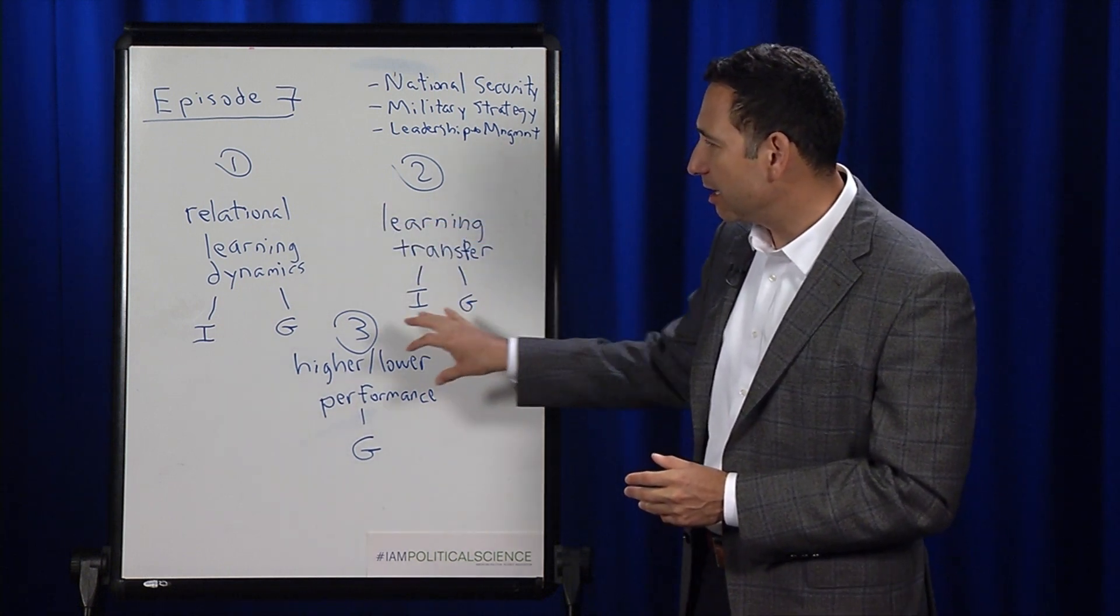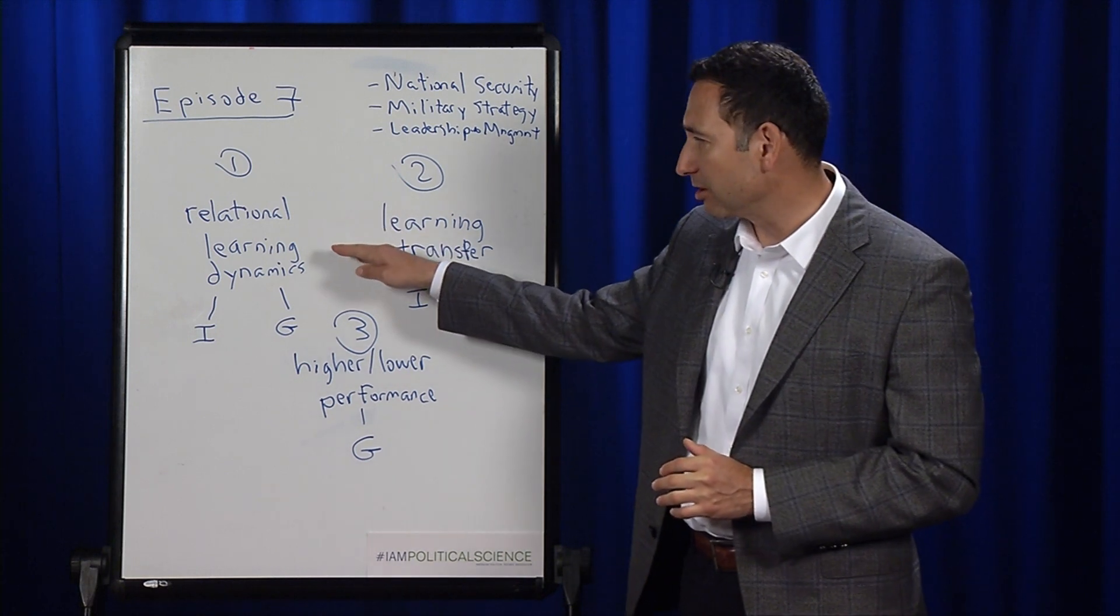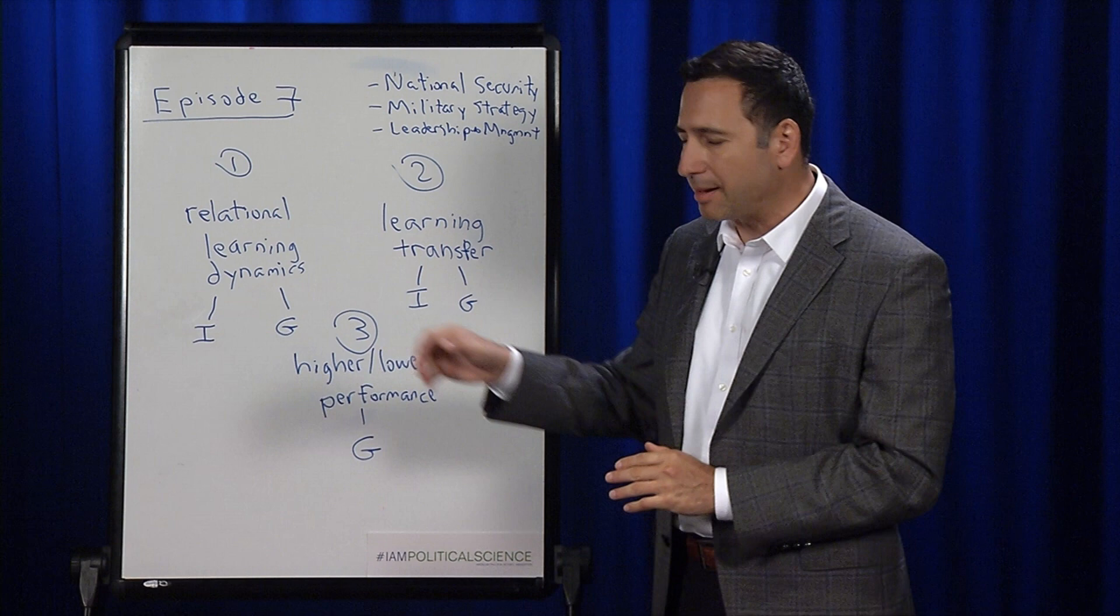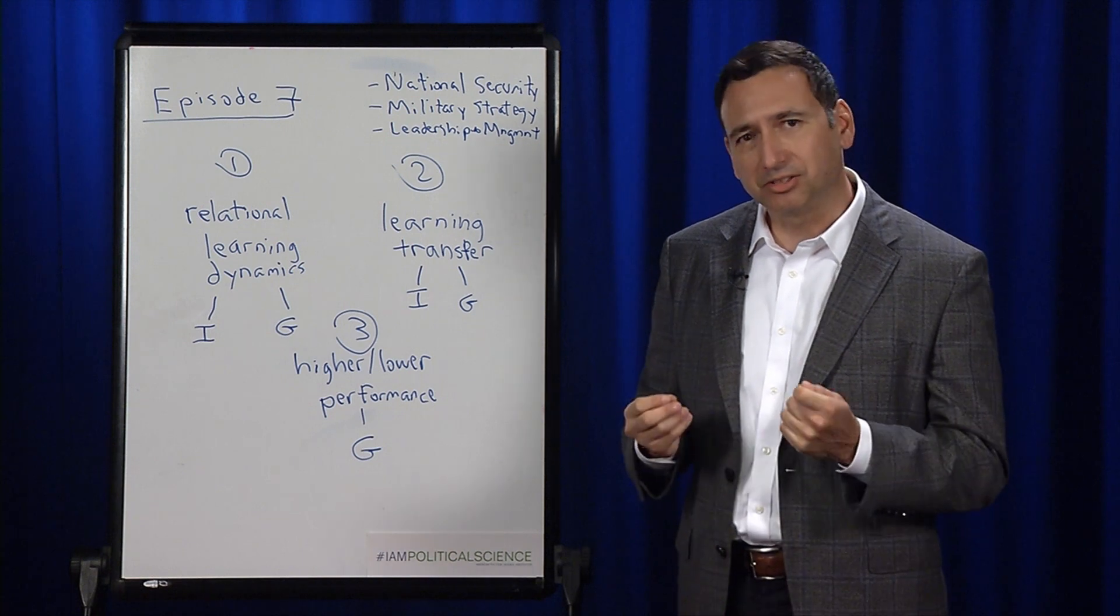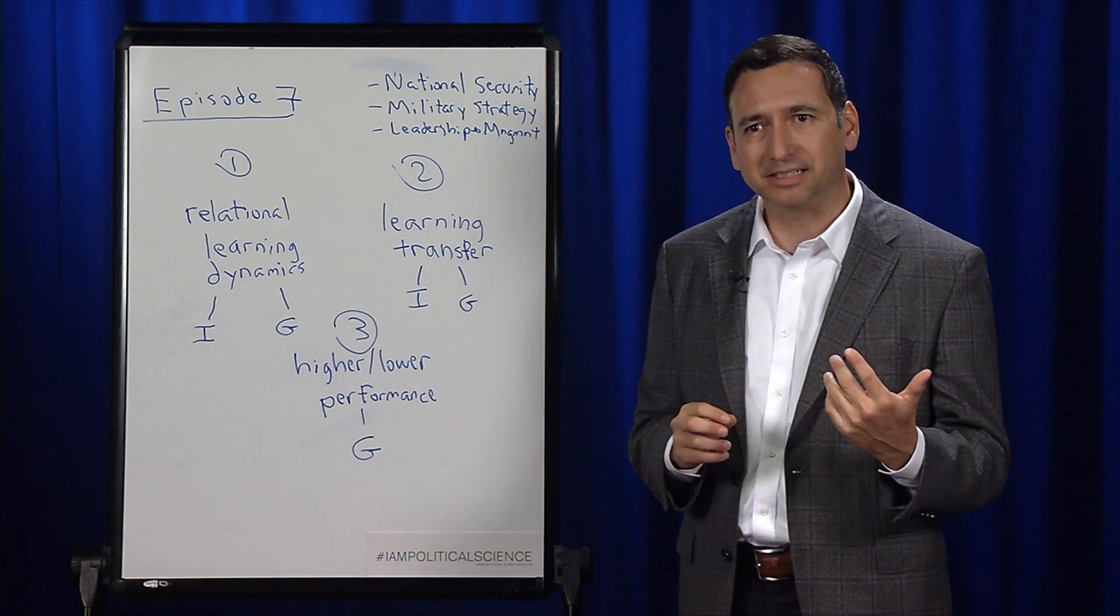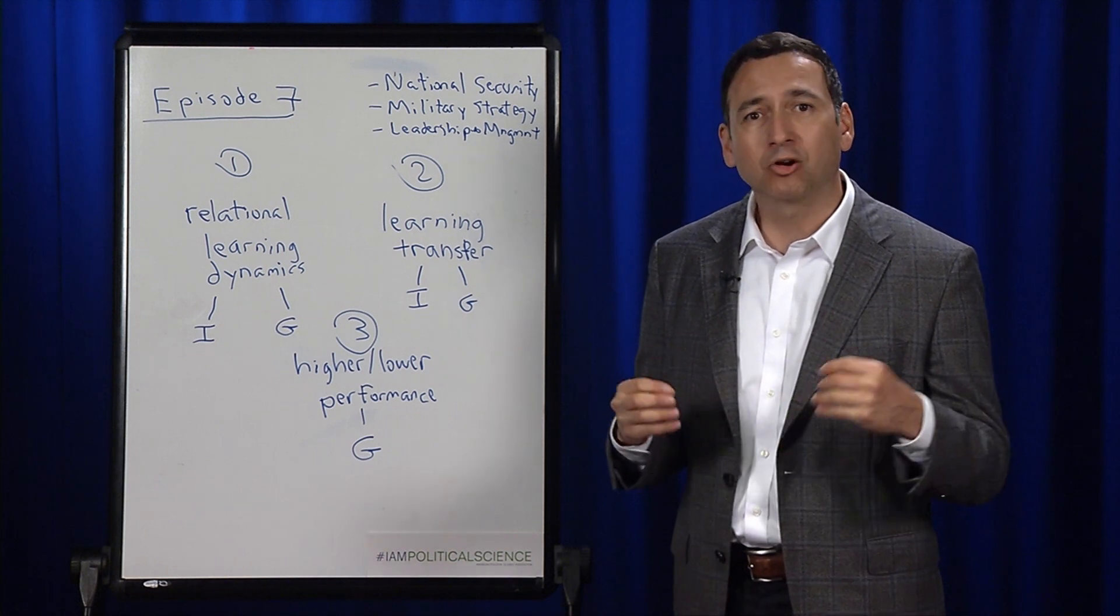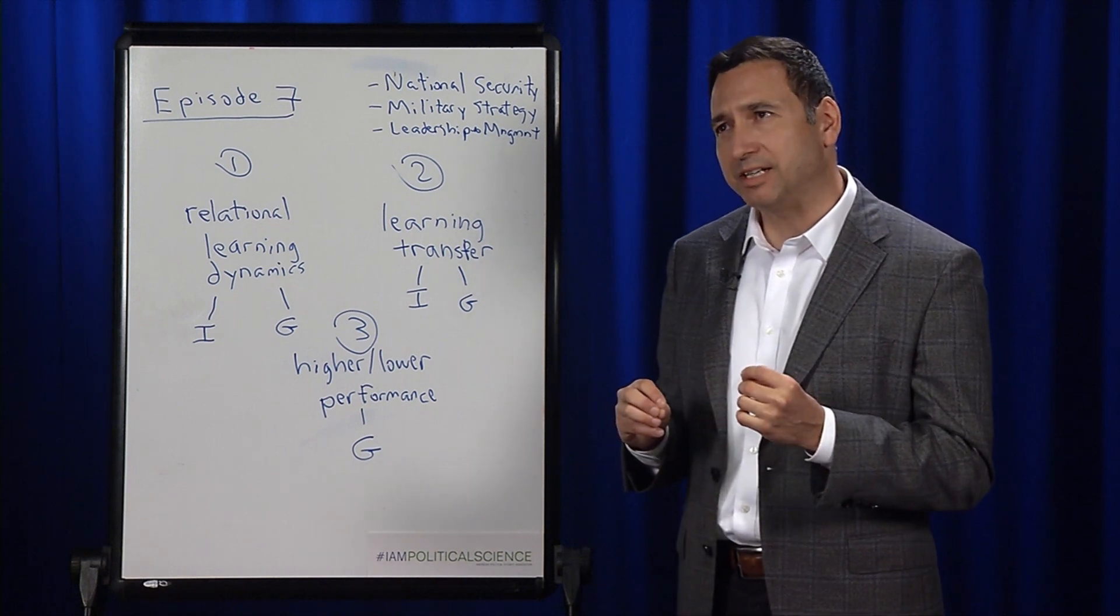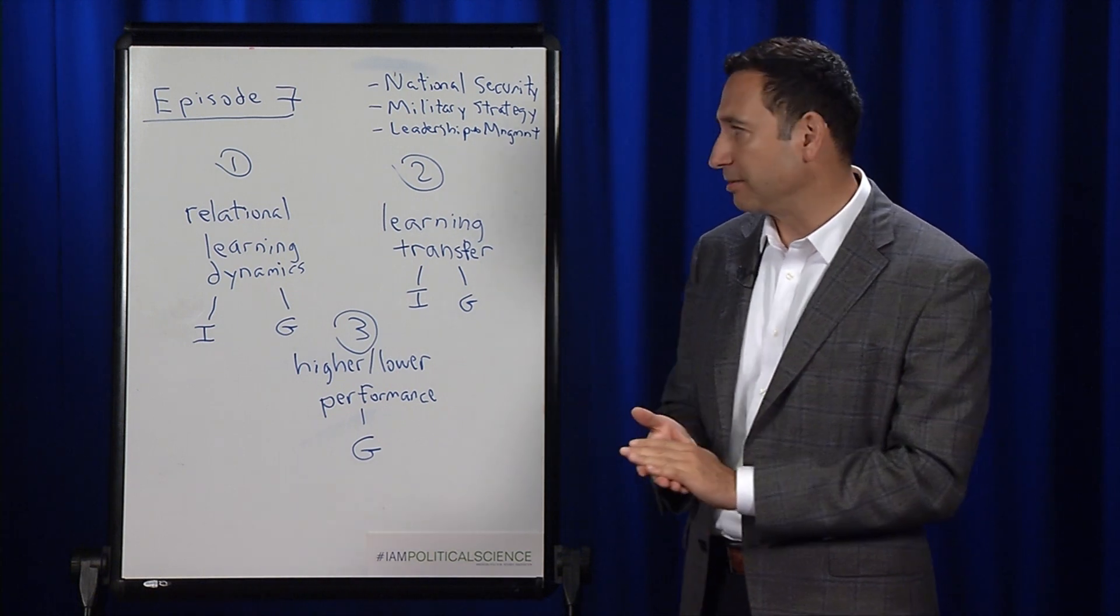There are three ways of doing assessments I posit. One relates to relational learning dynamics, which has both individual and group dynamics. When I'm talking about relational learning dynamics at the individual level, we're asking questions such as: Is the student self-aware? Is the student aware that he or she has biases? Is the student open and inquisitive about learning new information? Does the student exhibit the traits of intellectual humility, or is the student arrogant? These are individual attributes that we attempt to measure.